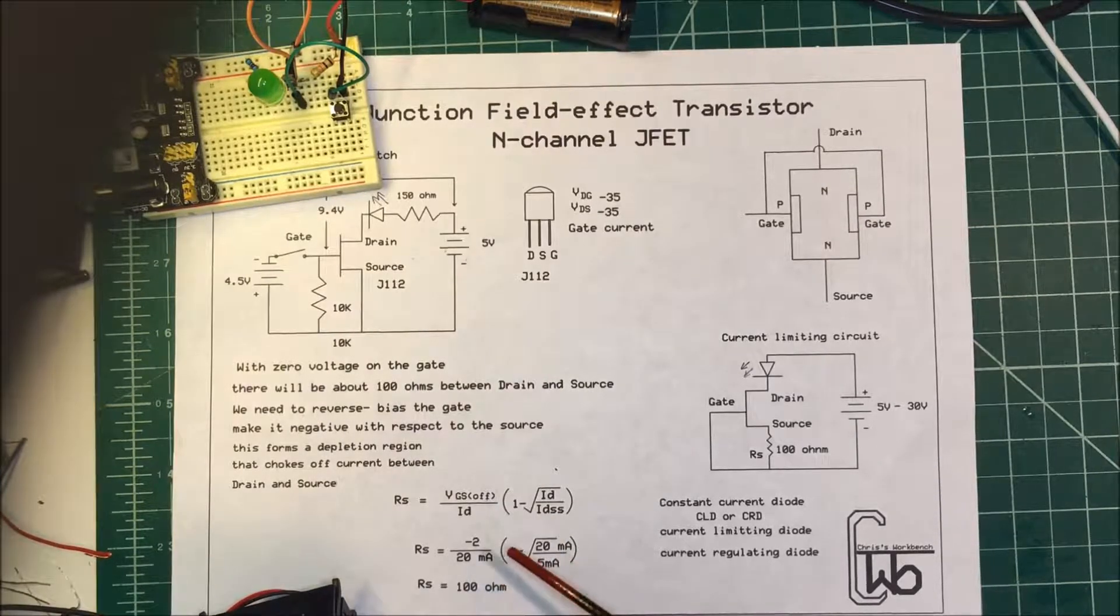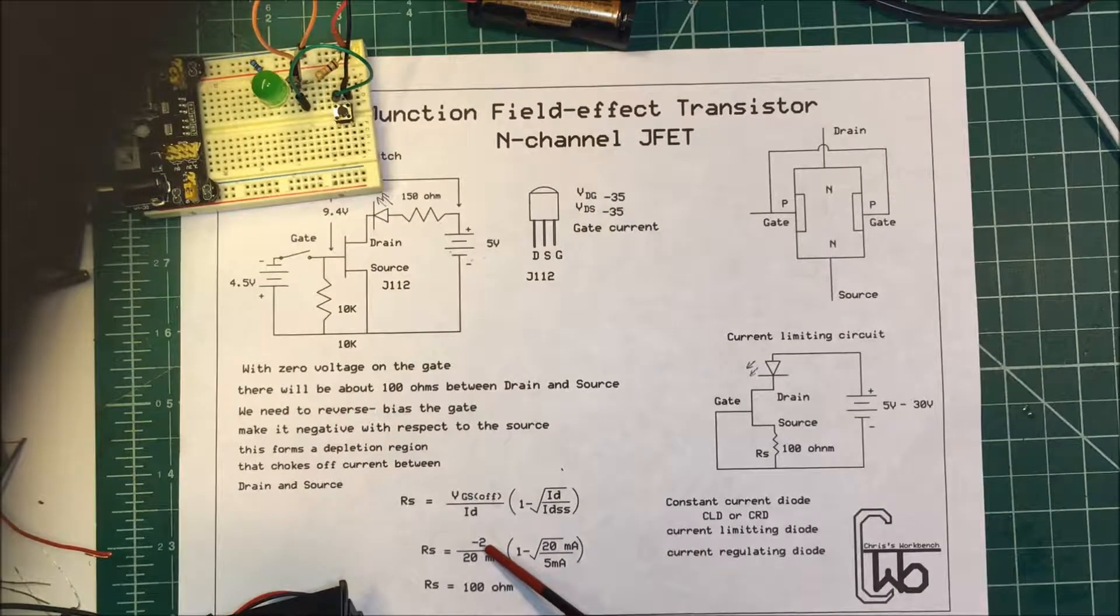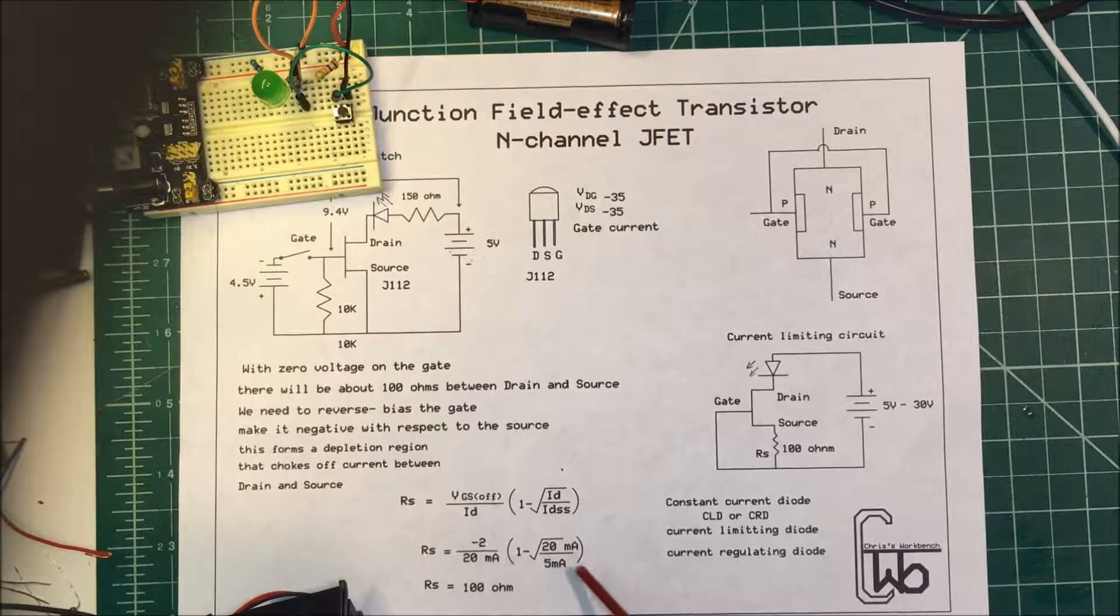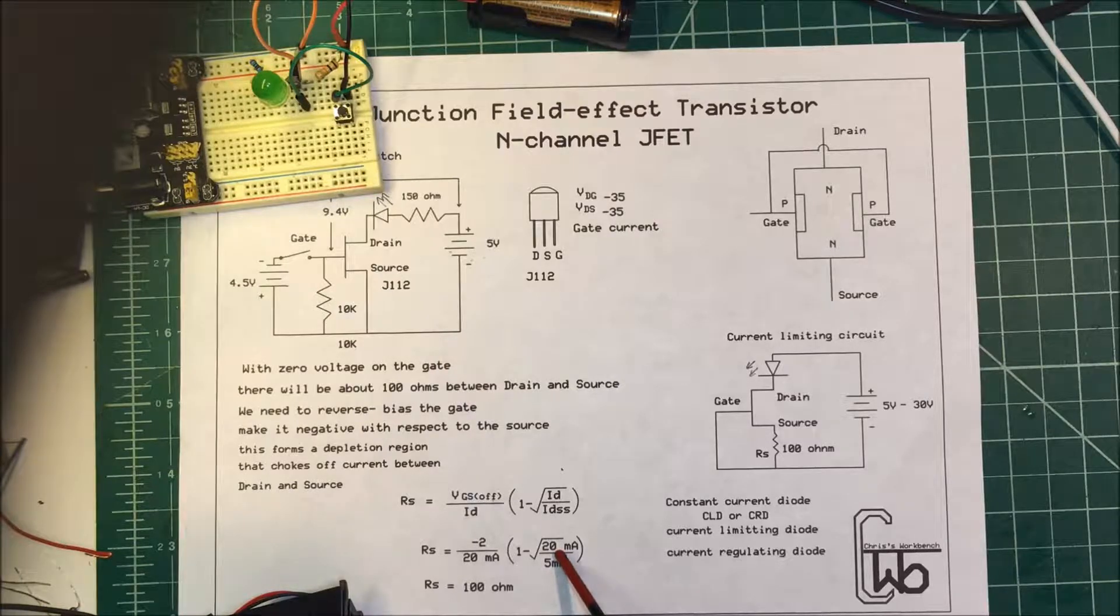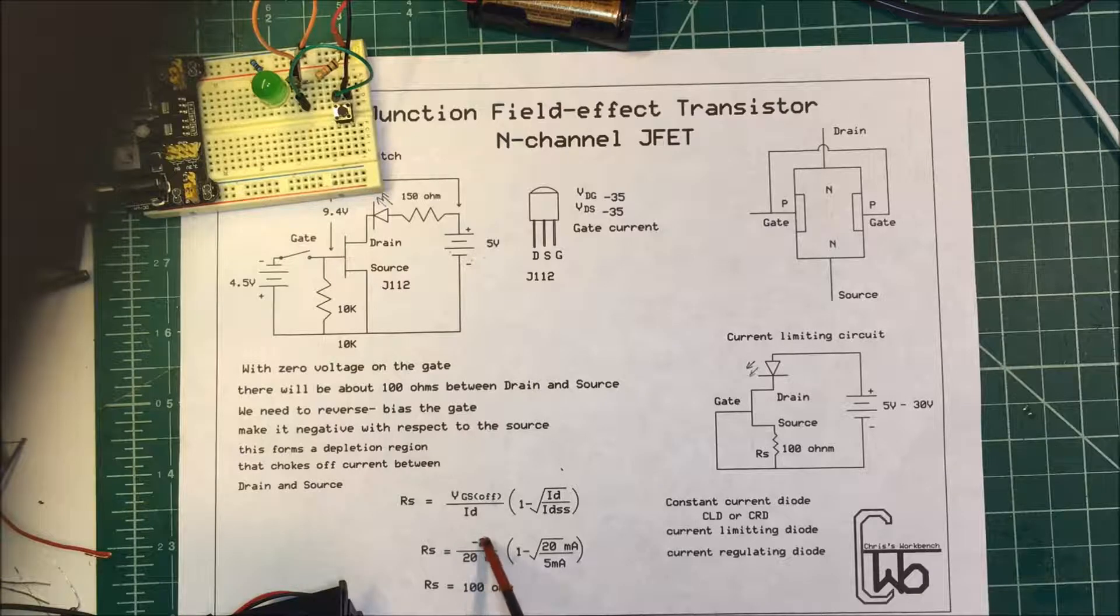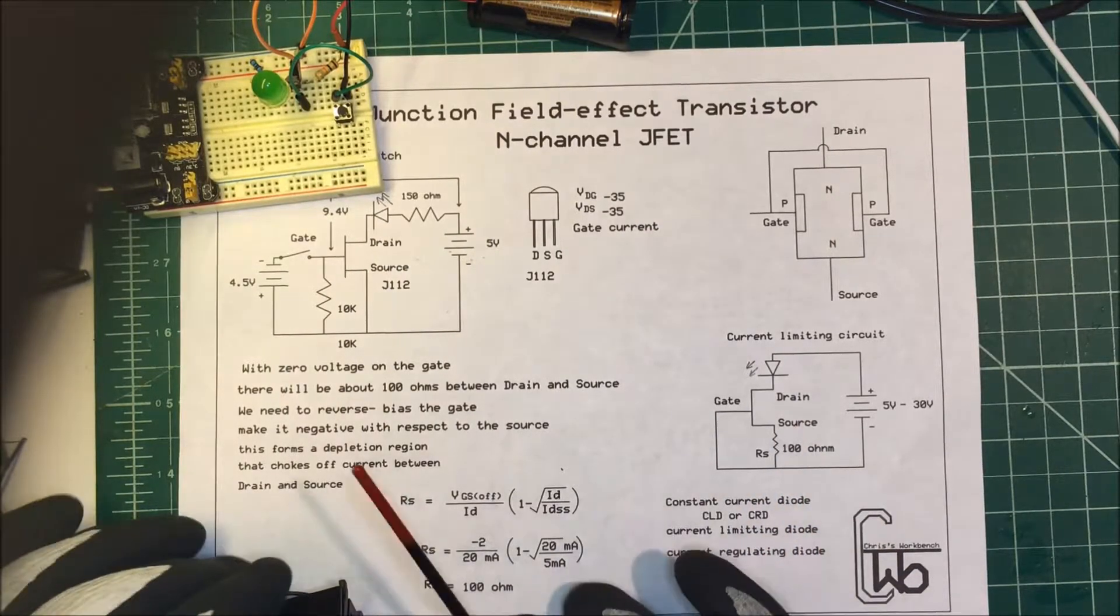We're going to plug those numbers in here. I picked minus 2 here. I could pick 2 and a half, but I put minus 2 there and 20 milliamps. This is 5 milliamps. I have my 5 milliamps divided into my 20 milliamps. That's going to be 4. The square root of 4 is 2. 1 minus 2 is minus 1. I take my 20 milliamps into minus 2. That's going to be minus 100 times minus 1, which is 100 ohms. I picked 100 ohms over here. We'll see if that limits the current to what I want.